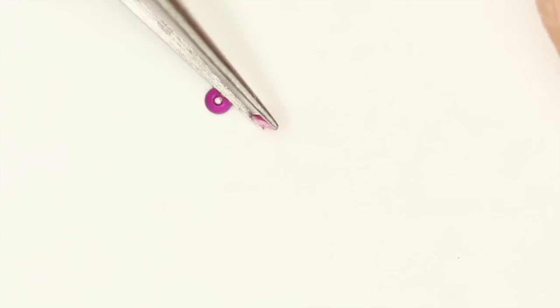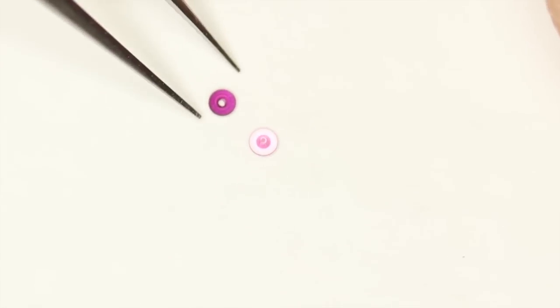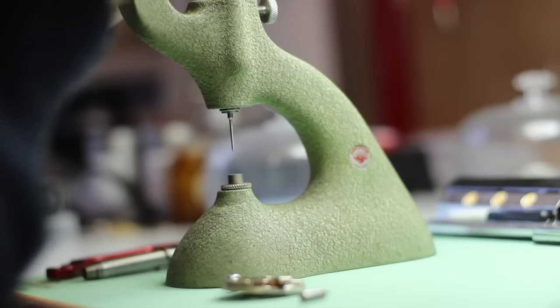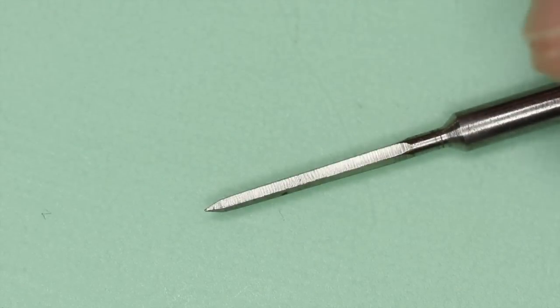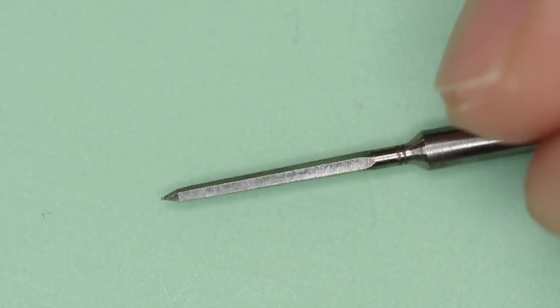We're going to have to slightly ream out the hole in the base plate of the watch to accommodate for this. To do that we're going to need the dueling tool again and we've chosen the correct size of reamer which will ream out the hole to the exact diameter required.